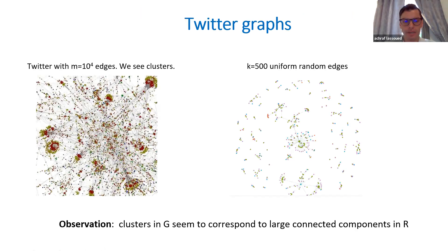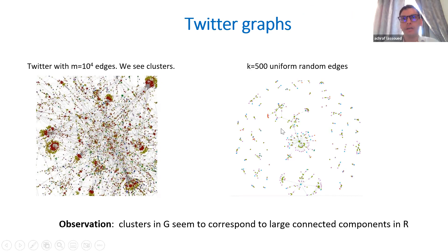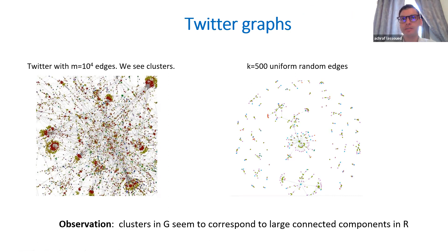Looking at the graph on the left, we have 10,000 edges and it has clusters. On the right, we have a reservoir with 500 edges, and we can show there are two giant components. There is a correspondence between the clusters on the left and the giant components on the right.